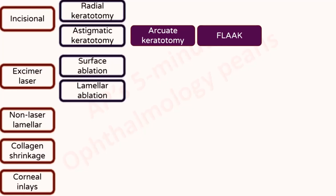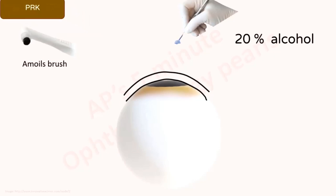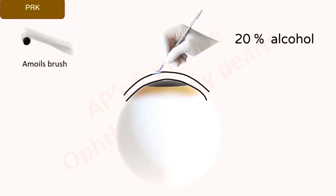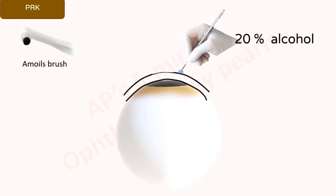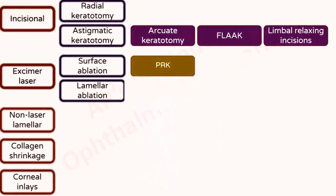The first type of stromal ablation is photorefractive keratectomy. In PRK, the corneal epithelium is removed either with an Amoyl's brush, a blade, or 20% alcohol. Then the excimer laser is used for ablation of the Bowman's membrane and superficial stroma, following which a bandage contact lens is placed till the epithelium grows back. Sometimes mitomycin C is used at the end of the procedure to prevent corneal haze.